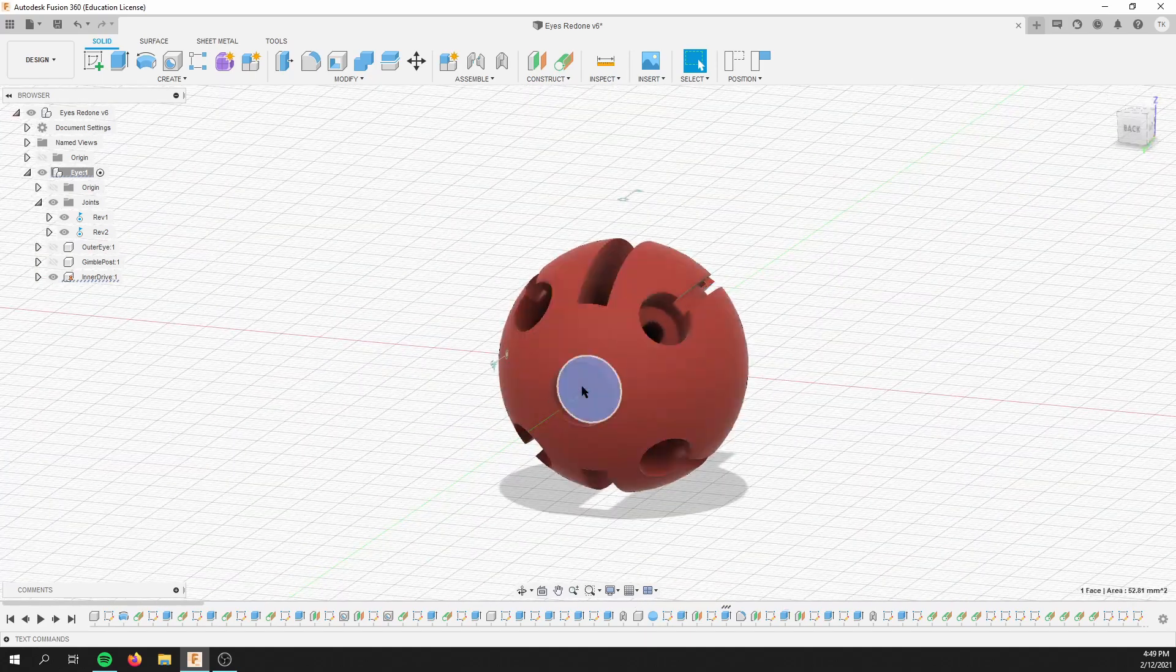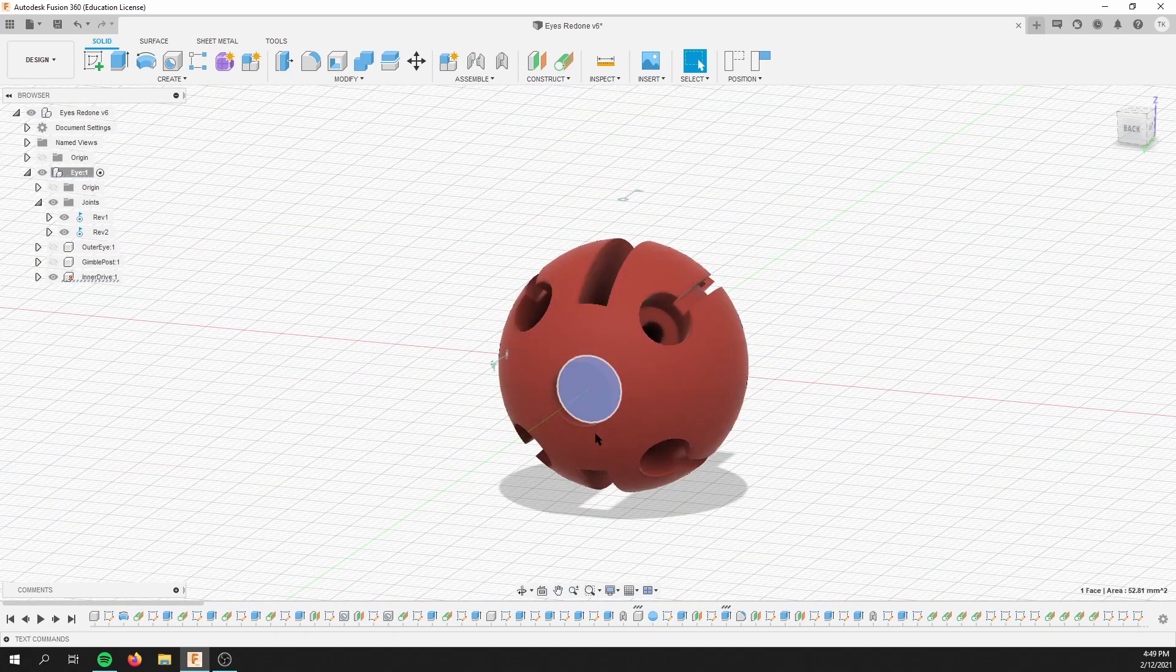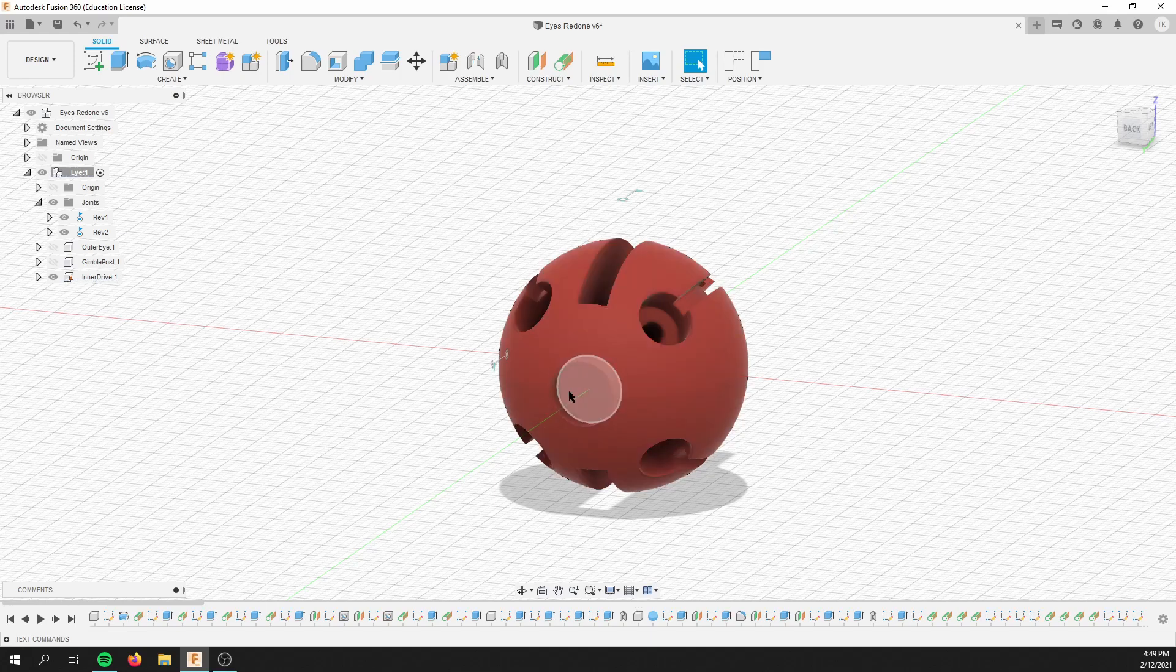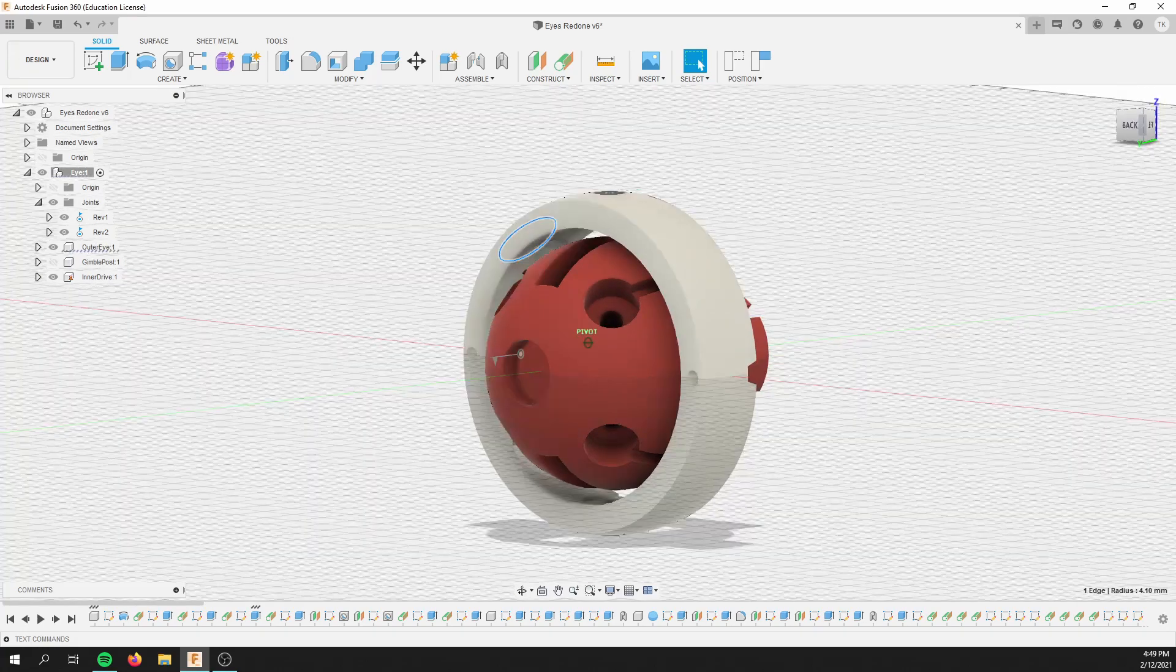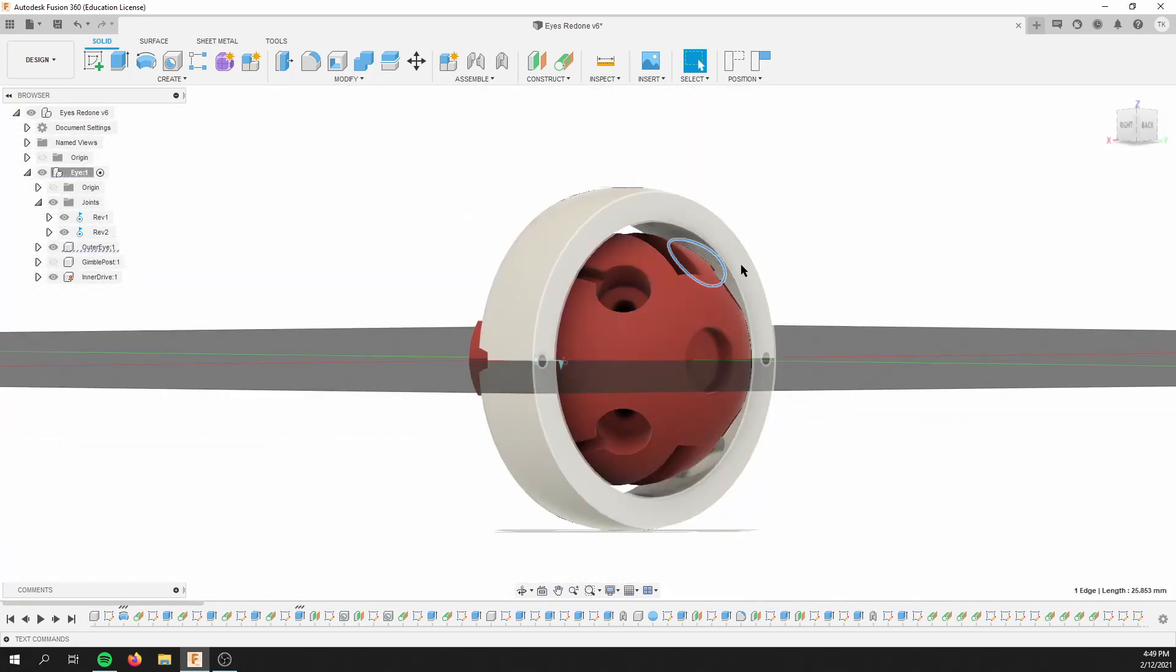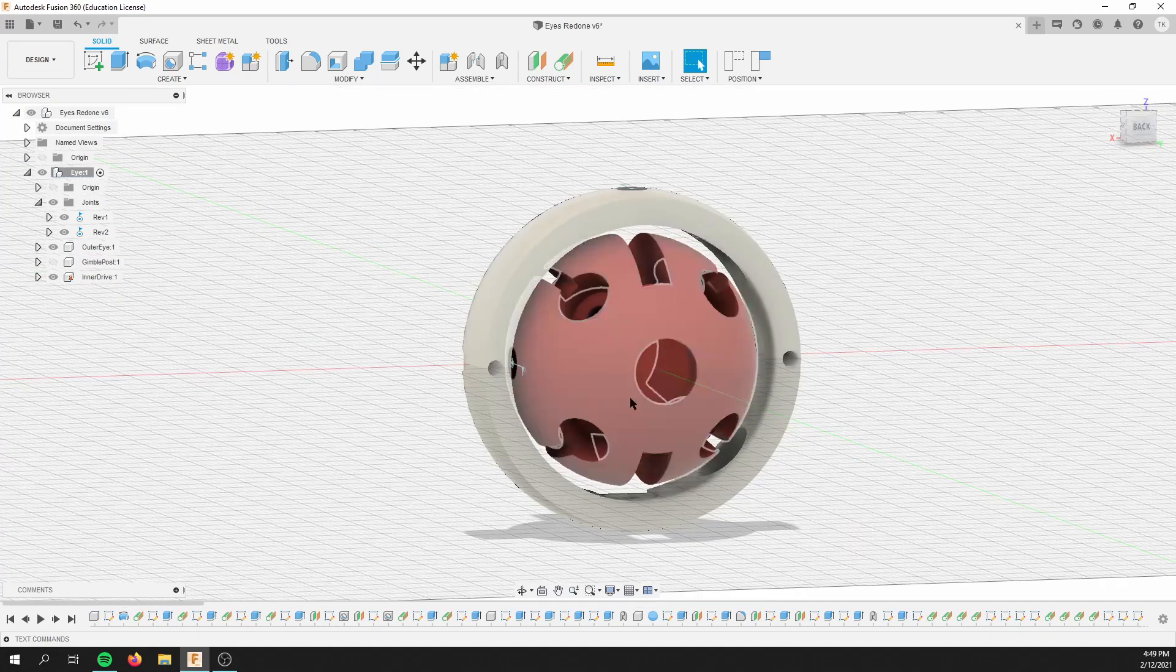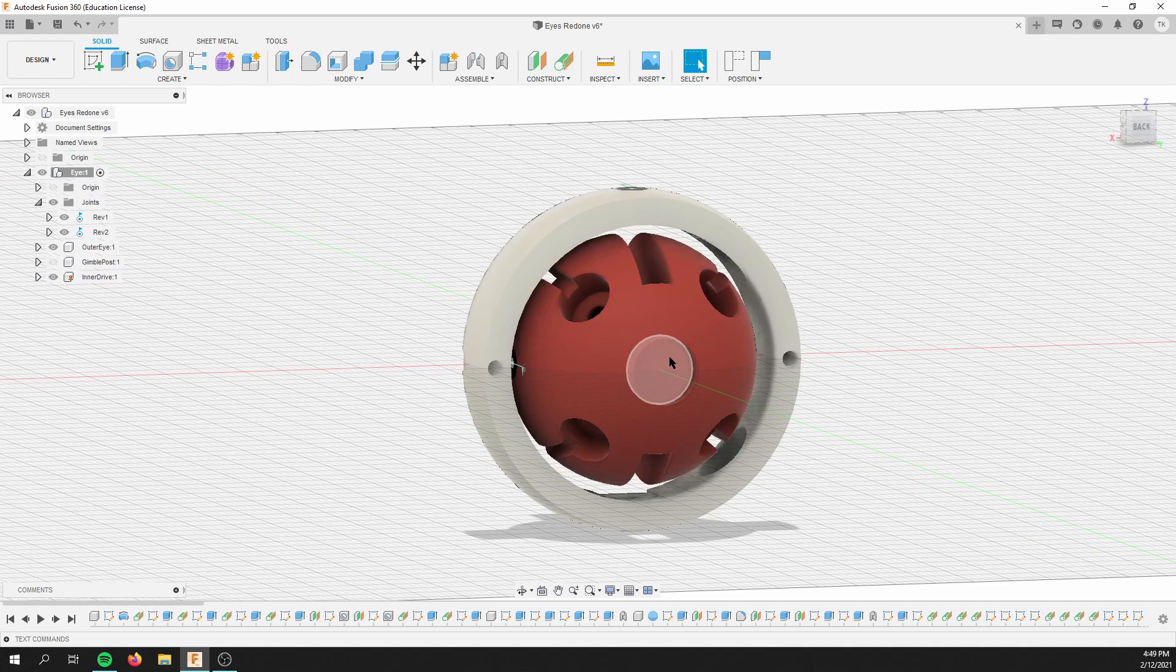And then right here, you can see another little divot. And that is for the homing magnet. So the four electromagnets that go inside the ring here get re-centered by the homing magnet here. And what that does is it allows you to have all the electromagnets off and the eye looking dead straight.